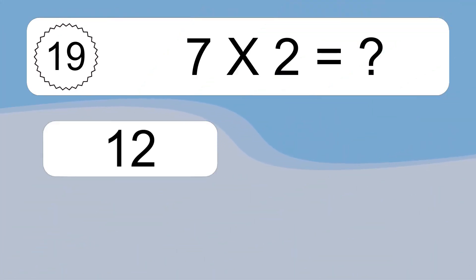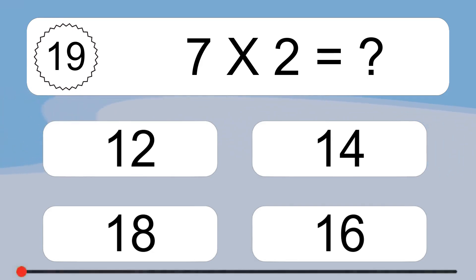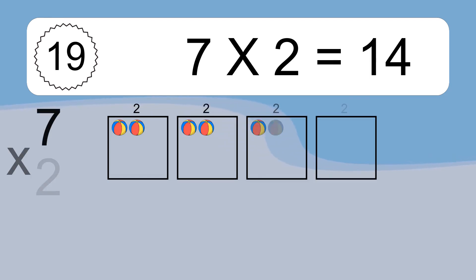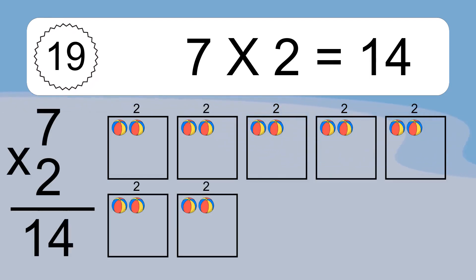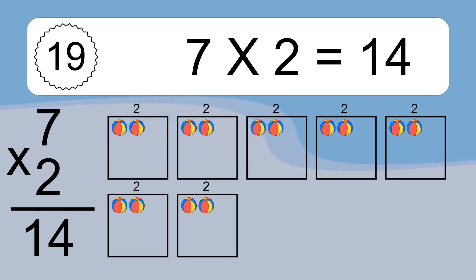7 times 2 equals what? 7 times 2 equals 14. We have 7 boxes and each box has 2 colorful balls inside. If you count all the balls in all the boxes together, you will have 7 times 2 balls. This equals 14 balls.